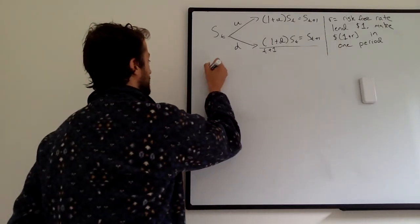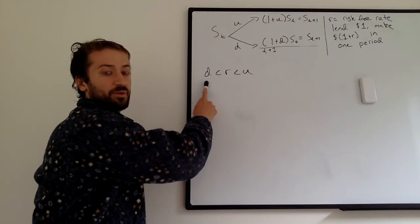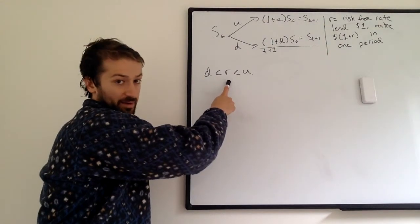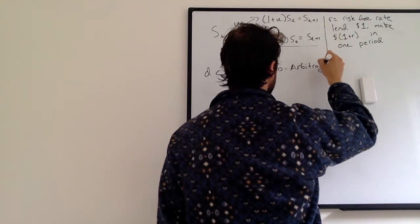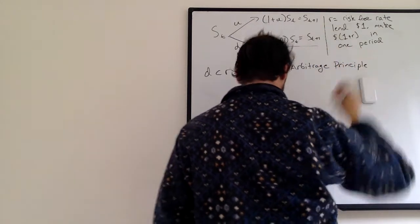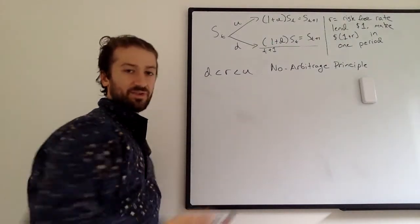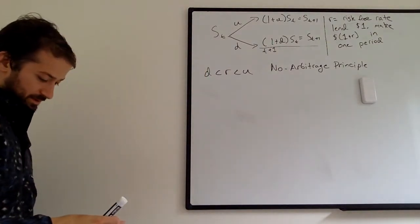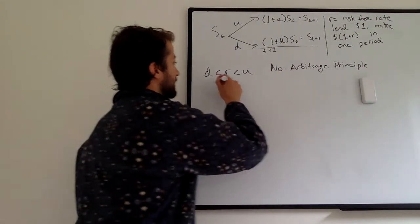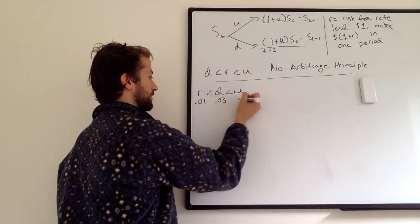We're going to introduce this constraint: the down move D is less than the risk-free rate R, which is also less than the up move U. This is something called the no-arbitrage principle. This is kind of intuitive — we already know D is less than U. But why does R have to be greater than D, and why does R have to be less than U?